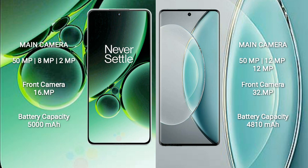OnePlus Nord 3 features a triple rear camera setup: 50MP, 8MP, and 2MP, with a 16MP front camera. Vivo X90s also features a triple rear camera setup: 50MP, 12MP, and 12MP, with a 32MP front camera.